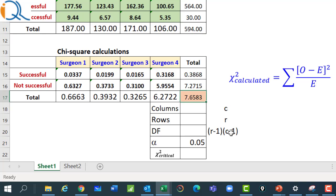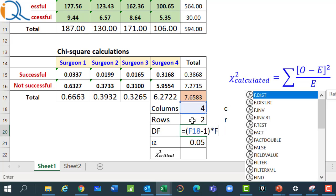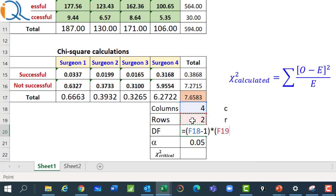Now, the degrees of freedom were seen as row minus one into column minus one. The number of columns is four surgeons, therefore four. The number of rows is two because successful and not successful. We cannot include the totals row, remember. So, we put two rows here. So, the degrees of freedom would be four minus one star columns minus one. So, that's obviously three.